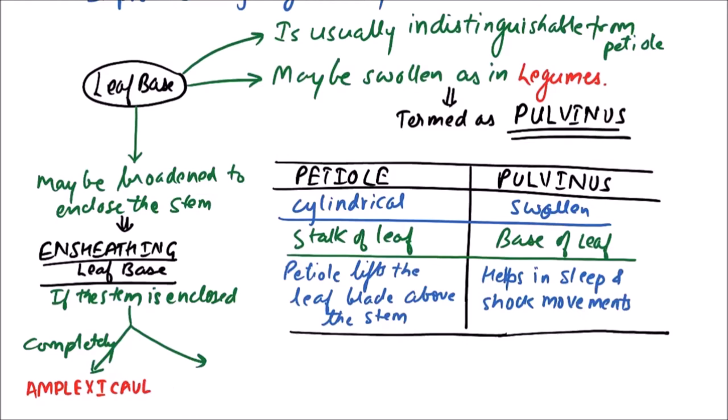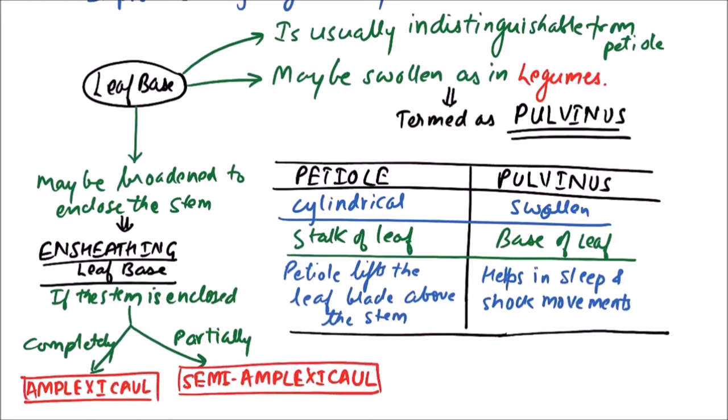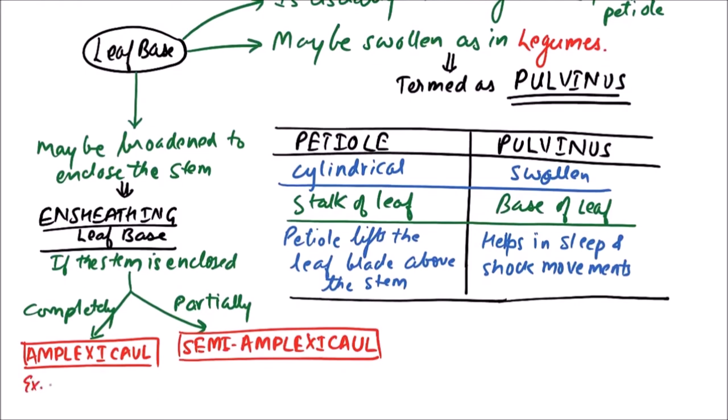While if the stem is enclosed partially, it is termed as semi-amplexicaul. Examples of amplexicaul include grasses and wheat, while buttercup is an example of semi-amplexicaul.